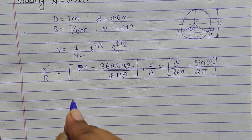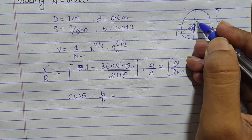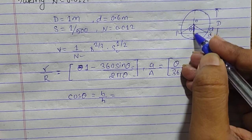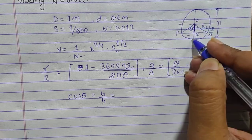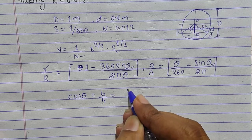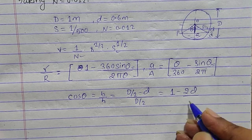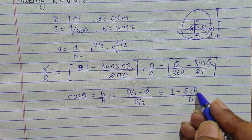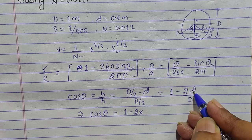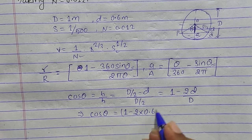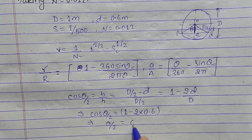First we need to find theta. In triangle OQR, cos(θ/2) equals the base divided by the hypotenuse. The base is D/2 minus small d, and the hypotenuse is D/2 (the radius). So cos(θ/2) = (D/2 − d)/(D/2) = 1 − 2d/D. Substituting values: cos(θ/2) = 1 − 2(0.6)/1 = −0.2.